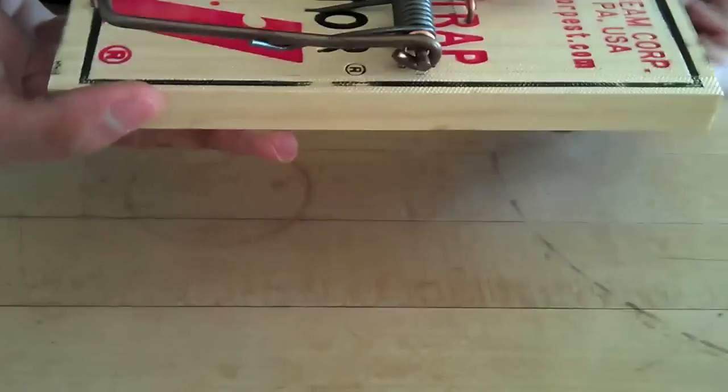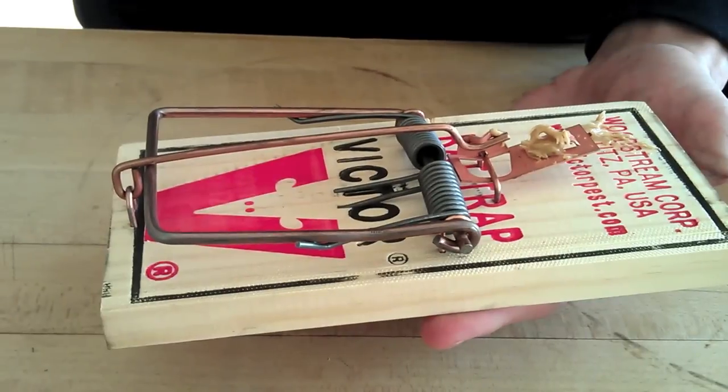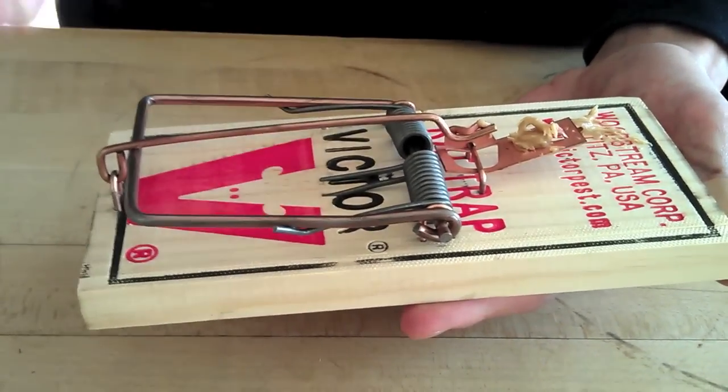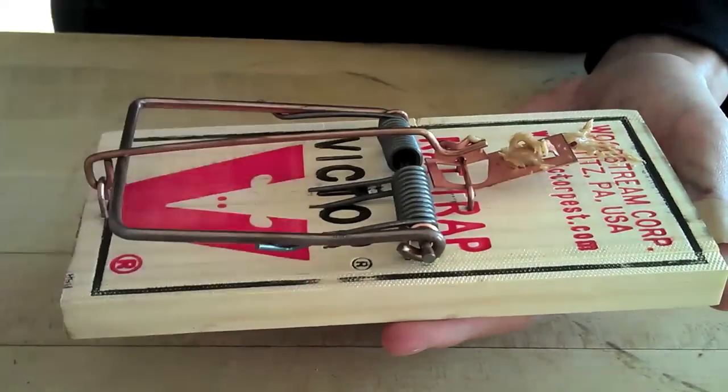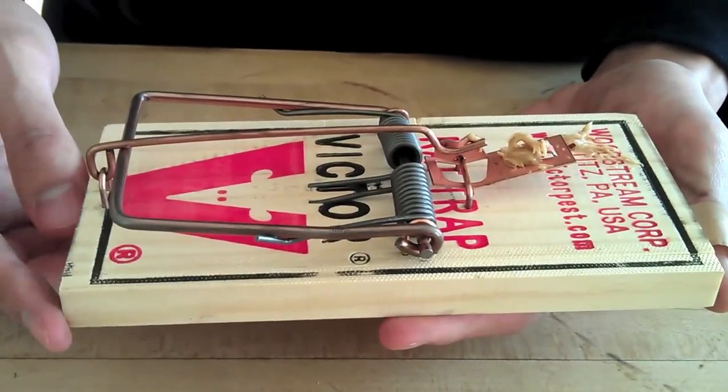So what's going to set it off is when the rat comes to try and get the bait right here, and as soon as the rat tries to touch it and get the bait, the locking bar will come out of that lock that you put it in, and the bow will snap back and kill the rat.